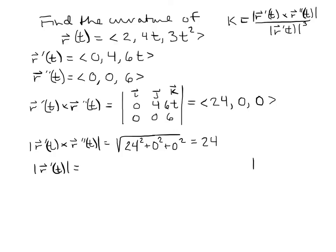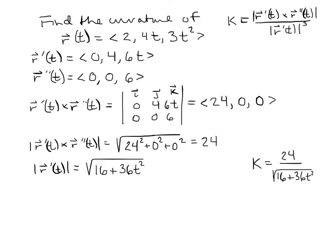So the top part of the curvature formula is 24. For the denominator, we go back to the first derivative (0, 4, 6t) and find its magnitude: √(16 + 36t²). We then cube that magnitude. So the curvature is 24 divided by (√(16 + 36t²))³, and we can find the curvature at any time by plugging in a value of t.